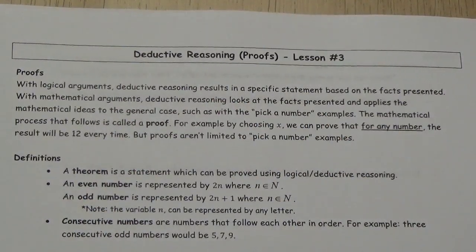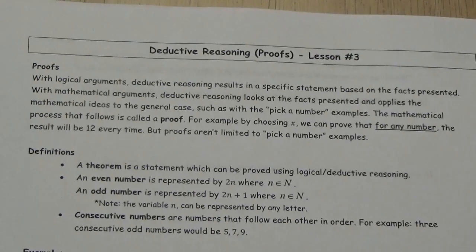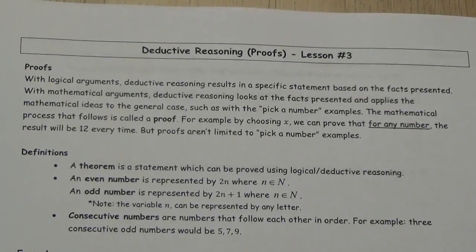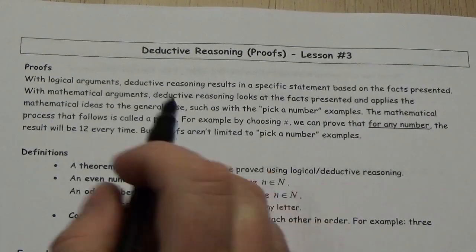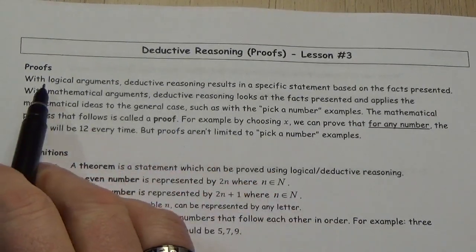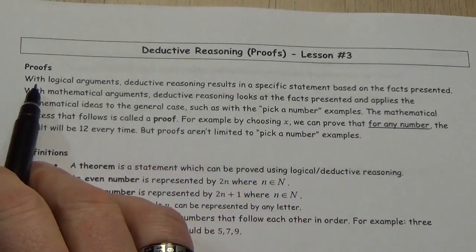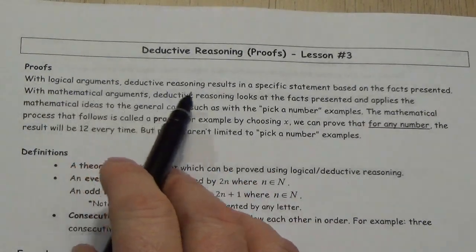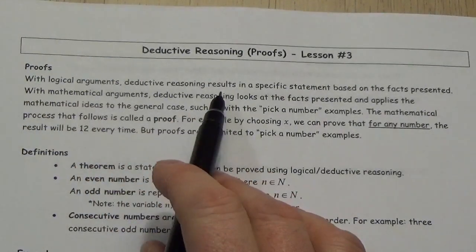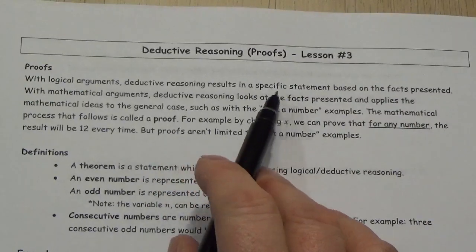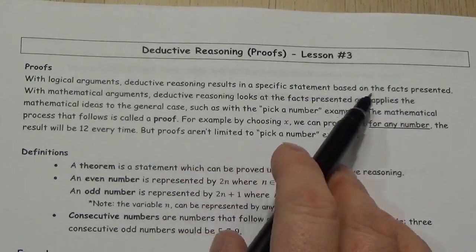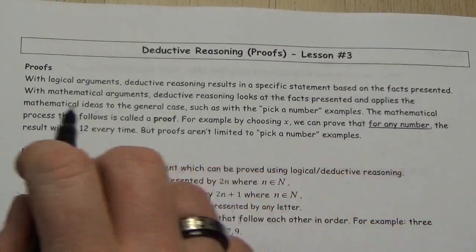You're going to see a certain style of proof pop out of this. In a previous lesson, we looked at column proofs, and this is going to be a little bit different. Proofs look like this, with logical arguments — deductive reasoning results in a specific statement based on the facts presented.